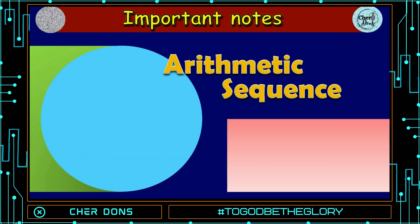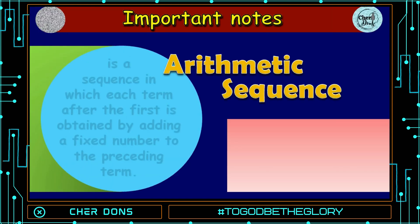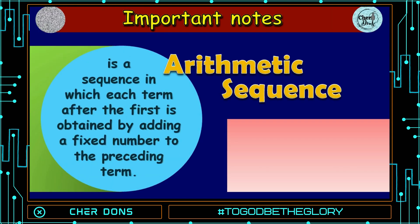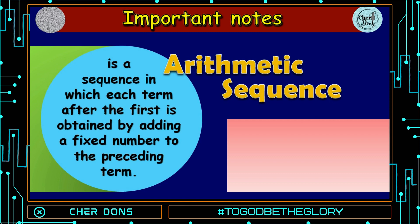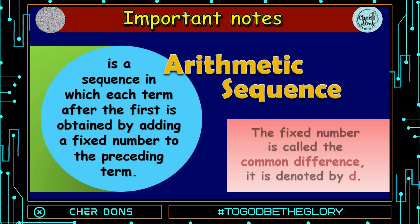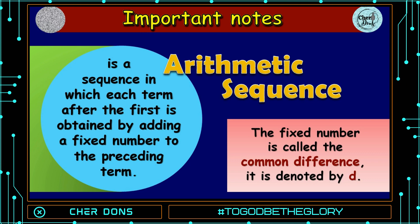Important Notes: An arithmetic sequence is a sequence in which each term after the first is obtained by adding a fixed number to the preceding term. The fixed number is called the common difference, and it is denoted by small letter d.